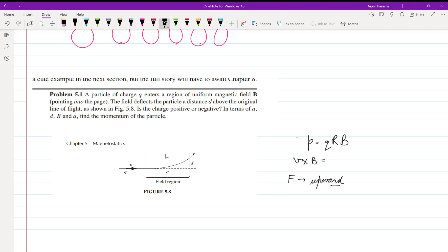You have to place your palm in the direction of velocity - the palm of your right hand in the direction of velocity - and then curl them in the direction of magnetic field. Here magnetic field is inside the page, so we'll be curling them inside the page.